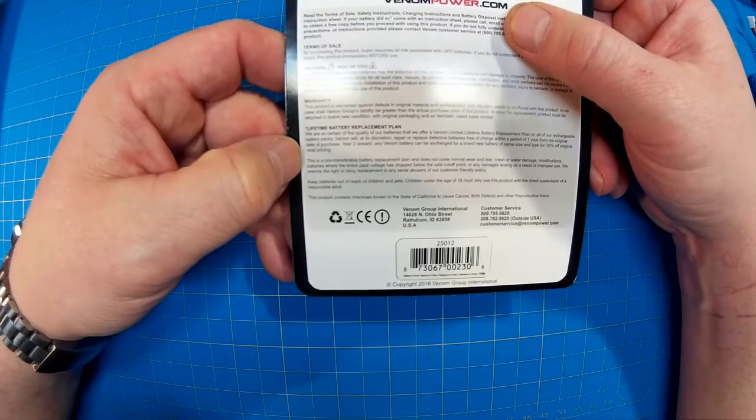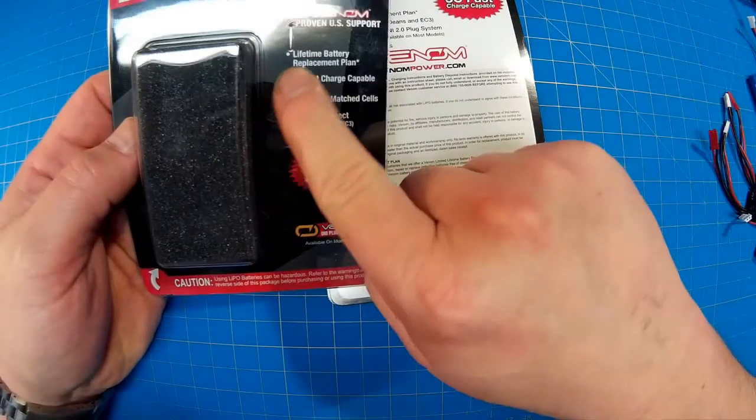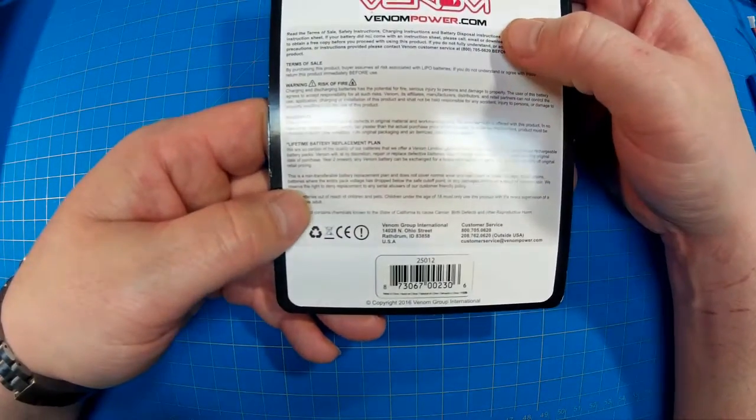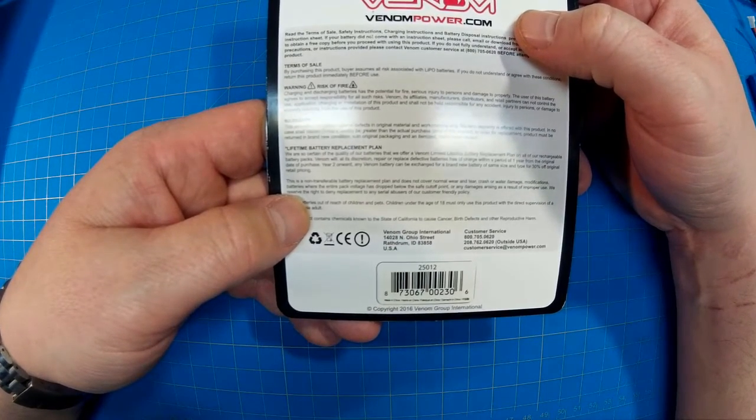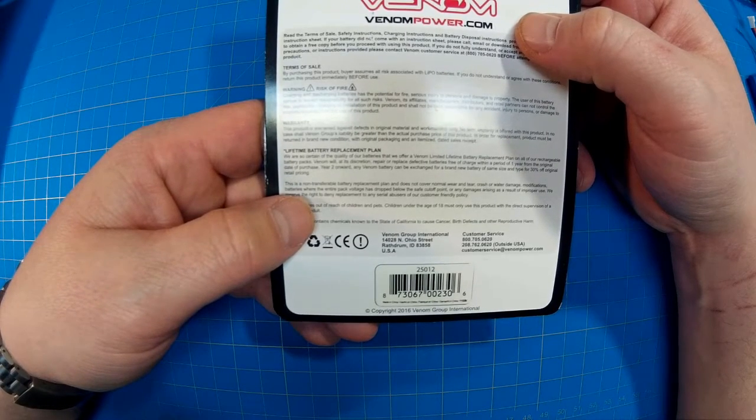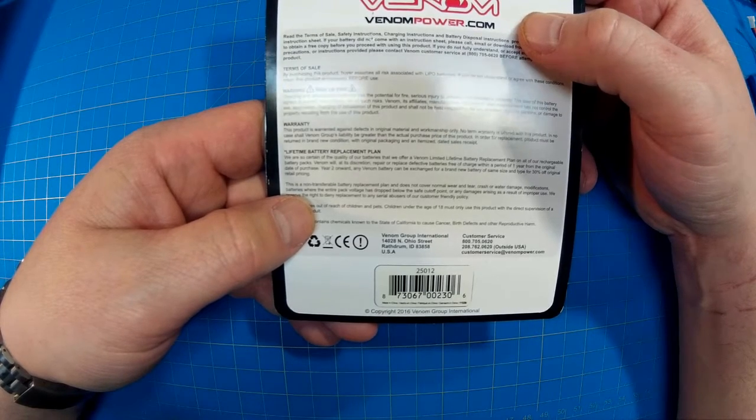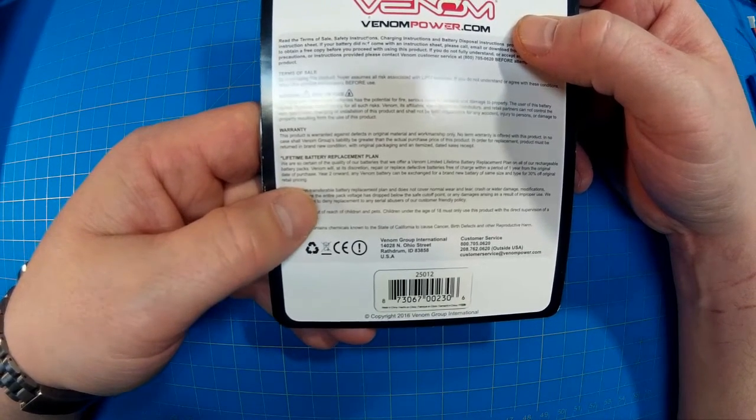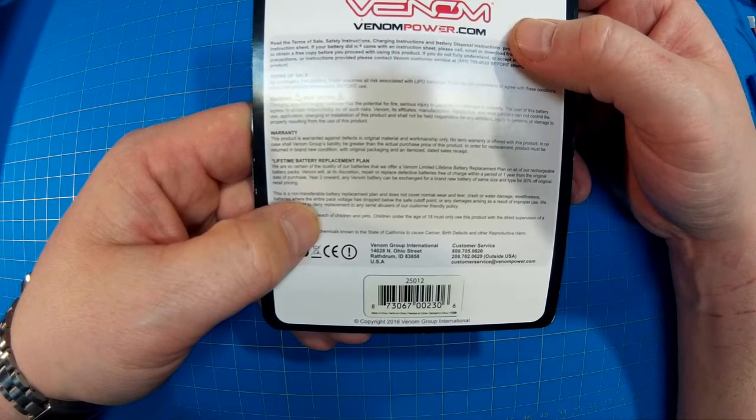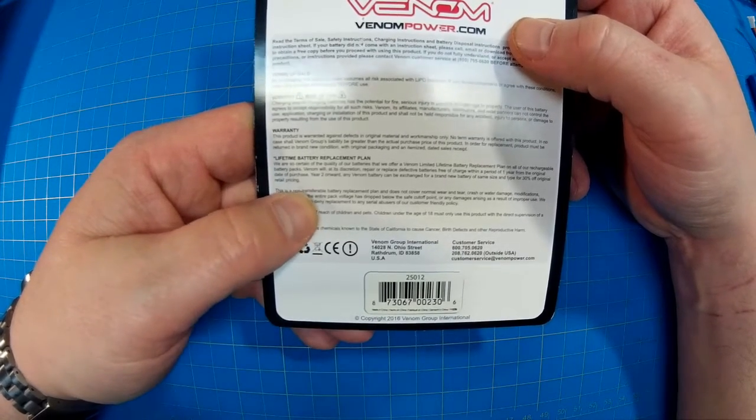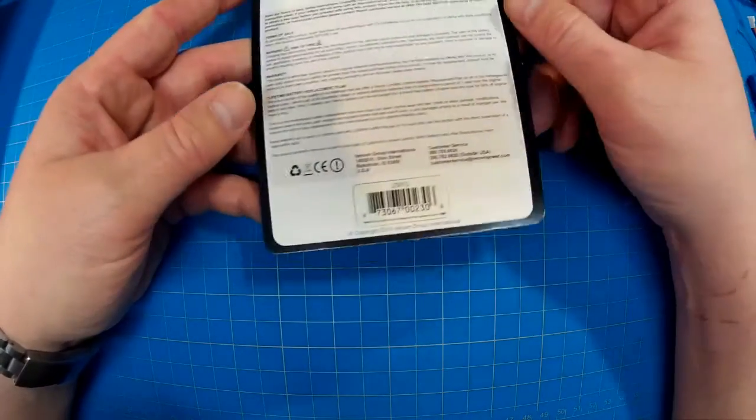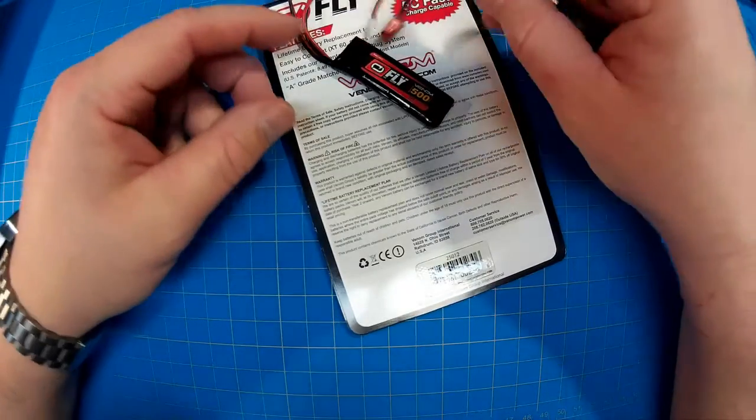But I wanted to highlight down here. Because on the front it has the lifetime replacement plan. It has that asterisk. And you think, oh yeah, of course. But I'm just going to read this to you what it says. We are so certain of the quality of our batteries that we offer a Venom limited lifetime battery replacement plan on all of our rechargeable battery packs. Venom will, at its discretion, repair or replace defective batteries free of charge within a period of one year from the original date of purchase.